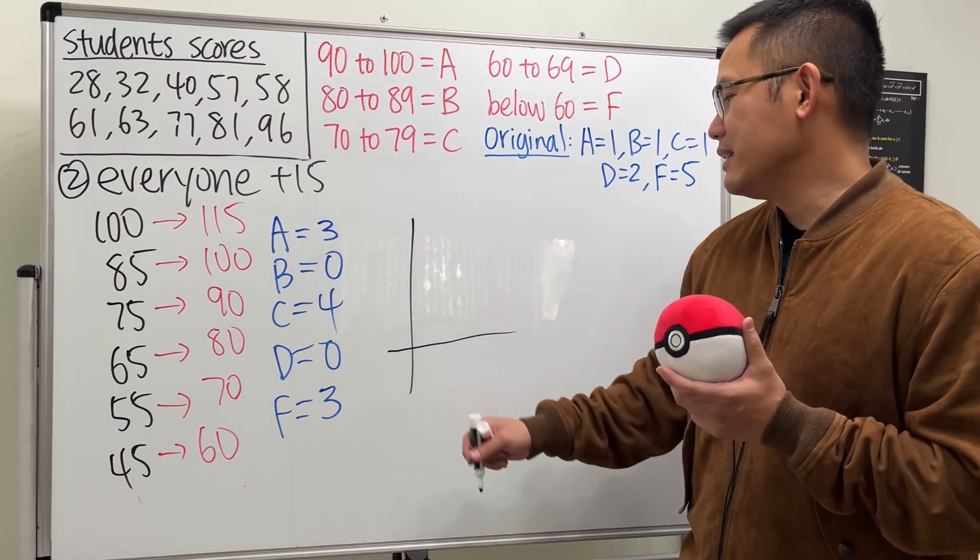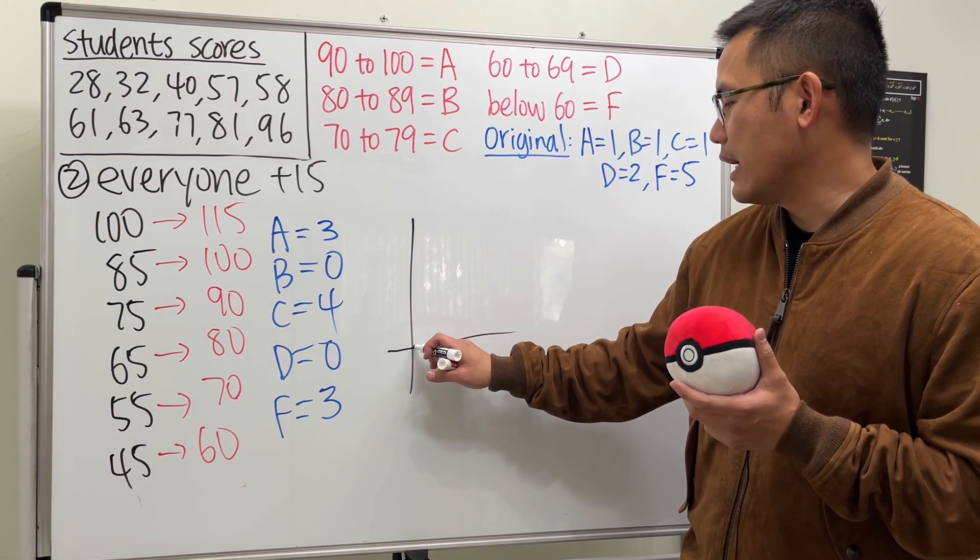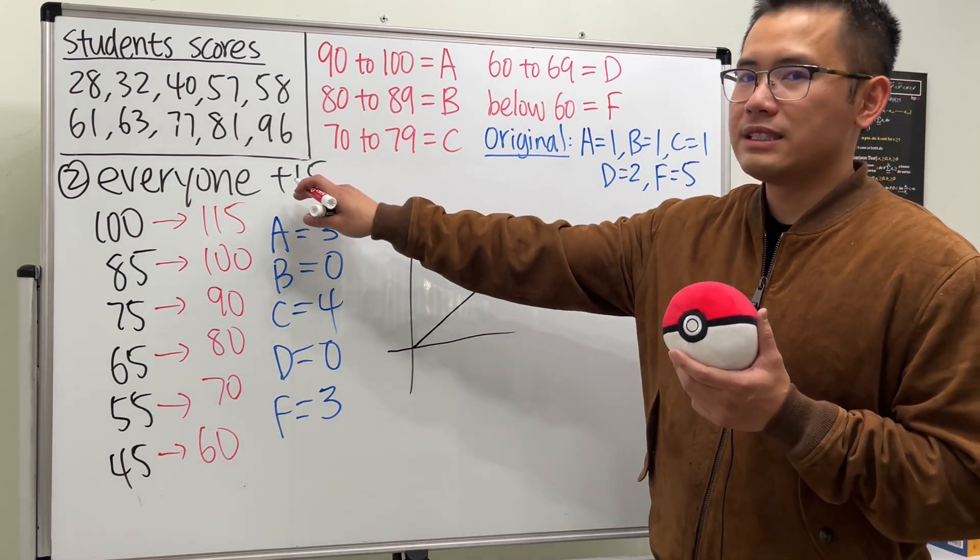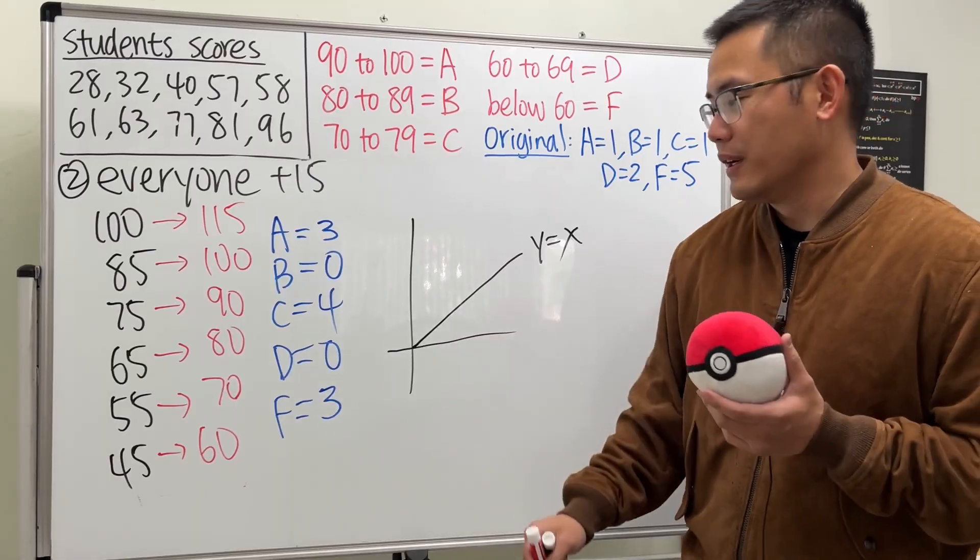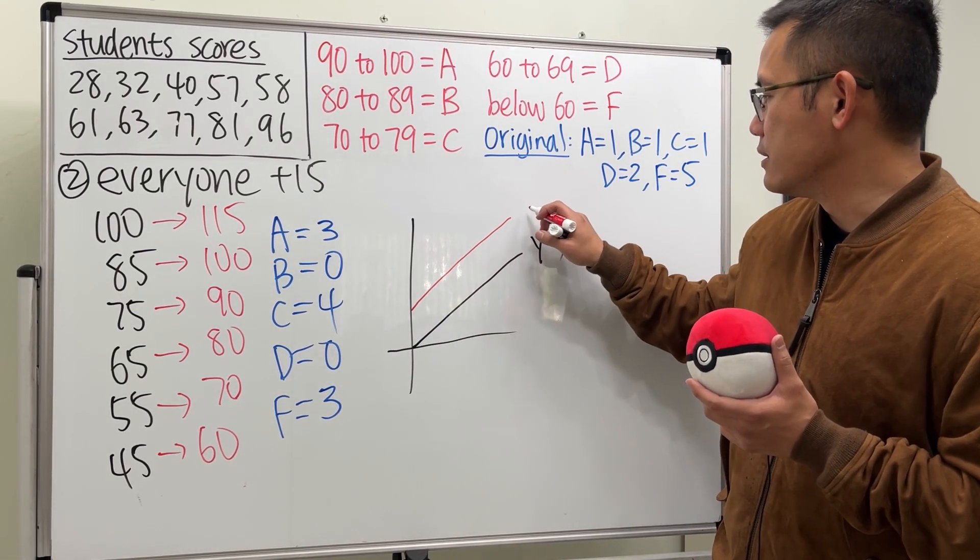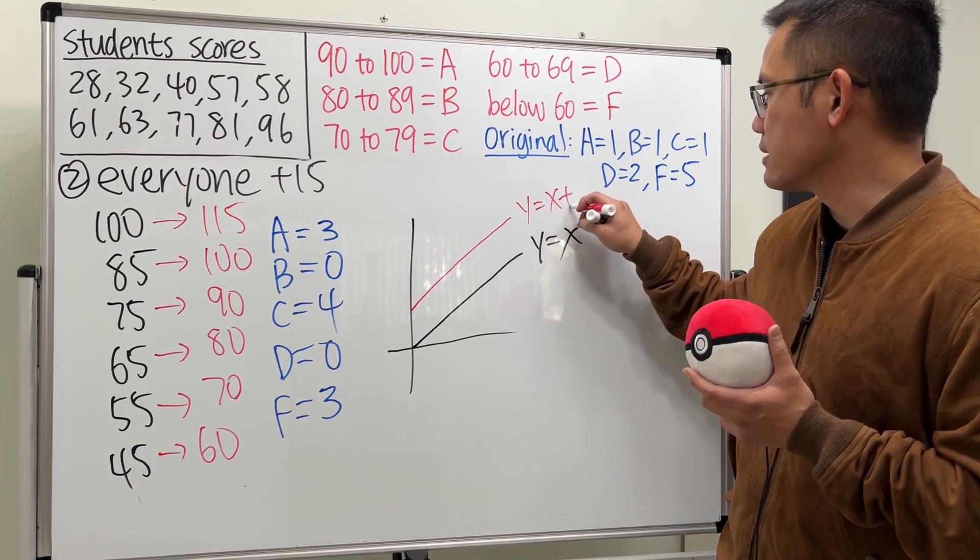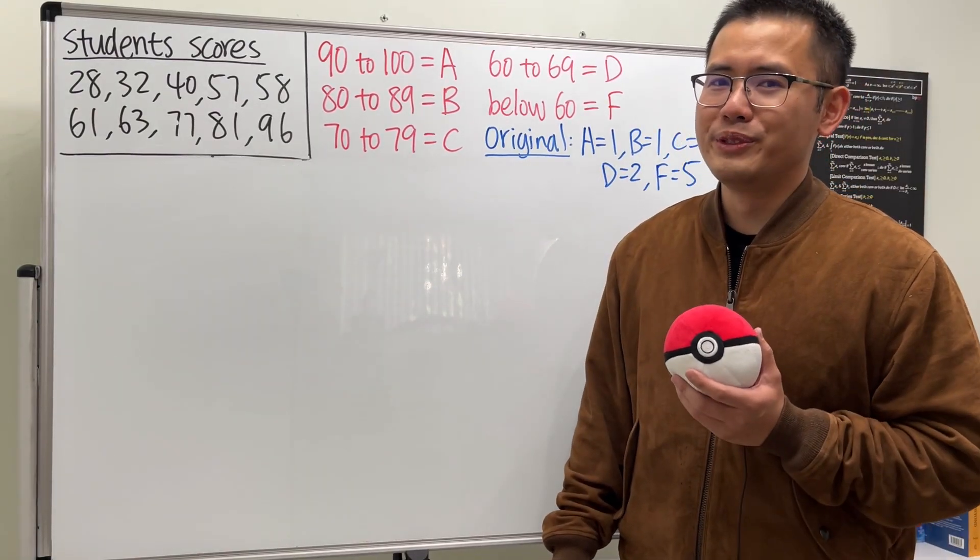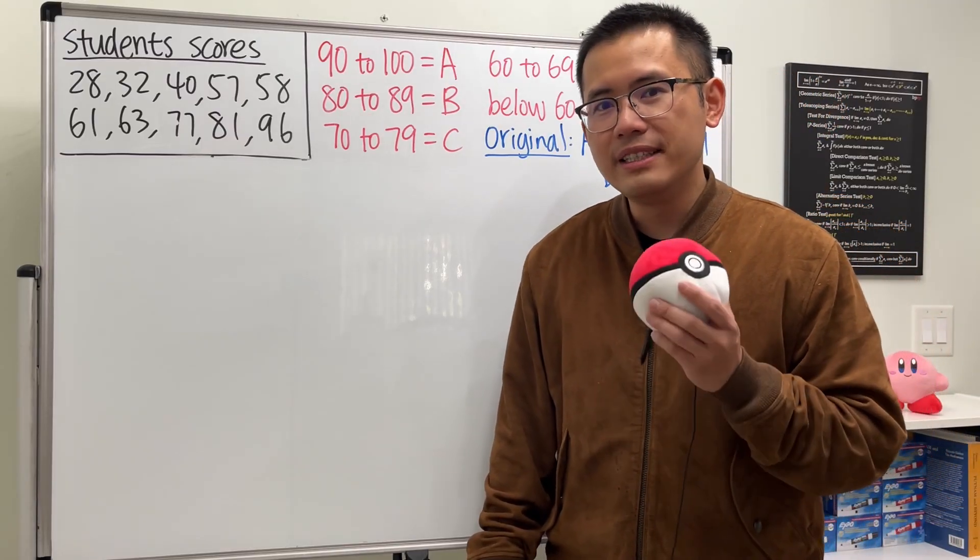So the idea is that originally, if you take a look, this is just Y equals X. Everybody plus 15. So this is not really like a curve. It's actually just a vertical shift and you are going to have this. So this is going to be Y equals X plus 15. And now this is the normal way to do this. We'll be utilizing the normal curve.